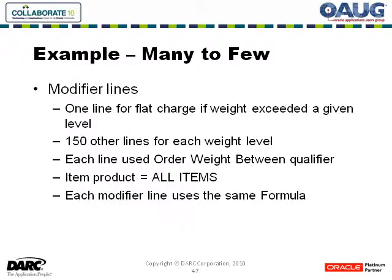On the modifier lines, in the worst case you'd see one line representing a flat charge per line if the weight had exceeded a given level — in this case, if order weight was over 150 pounds, each line would get a flat charge. But there were then 150 additional lines on each modifier, each representing essentially a one-pound increment. Each line had an order weight qualifier — weight between 0 and 1, or 1.001 and 2, for example. The item defined on the modifier lines was all items, and each modifier line used the same formula. The weight calculation would use the value on the modifier line, pass it into the formula, and return its value to the pricing engine.